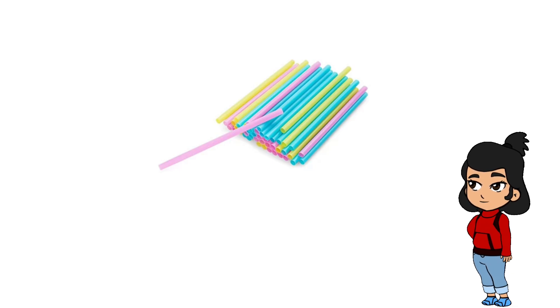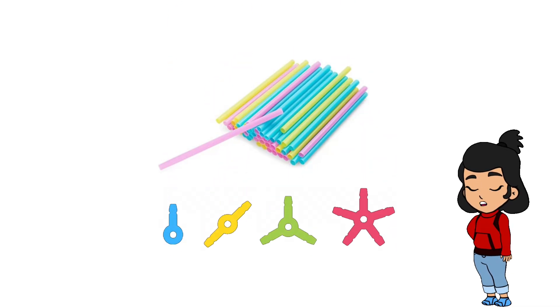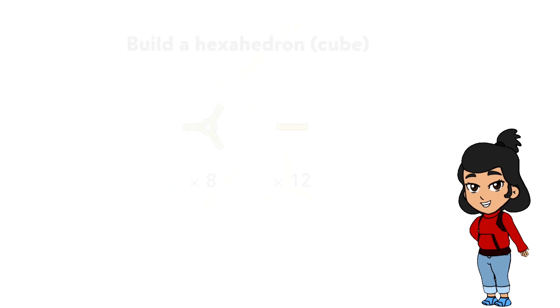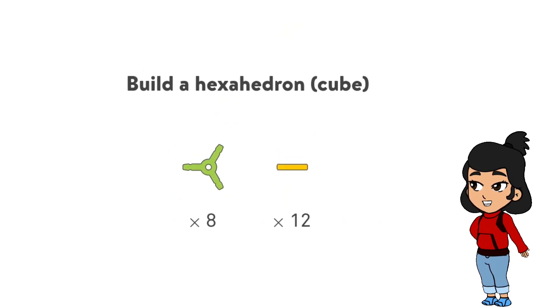Look at the screen where I have some colorful straws and connectors. First, let's count how many pieces we will need. We need 12 yellow straws and 8 green connectors.